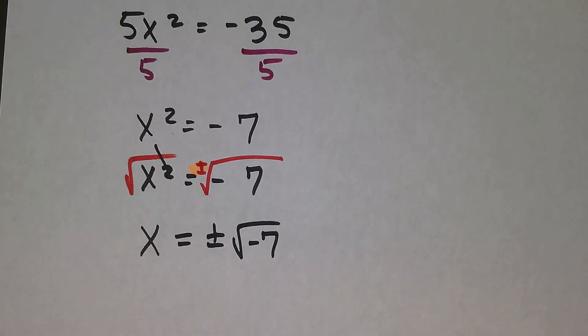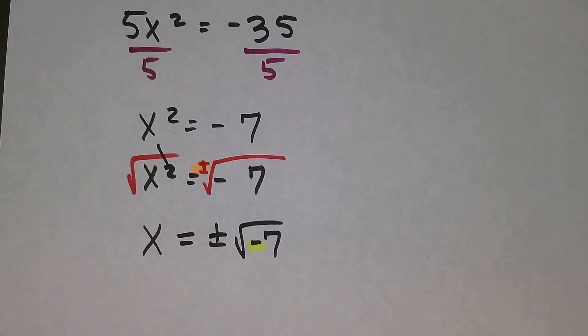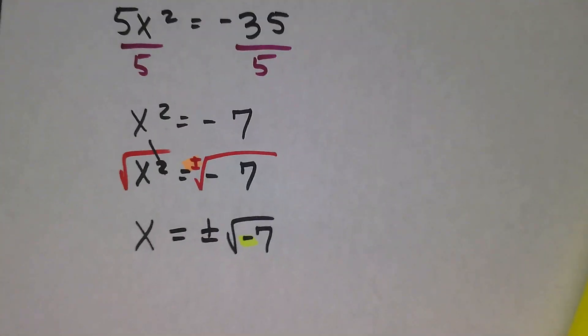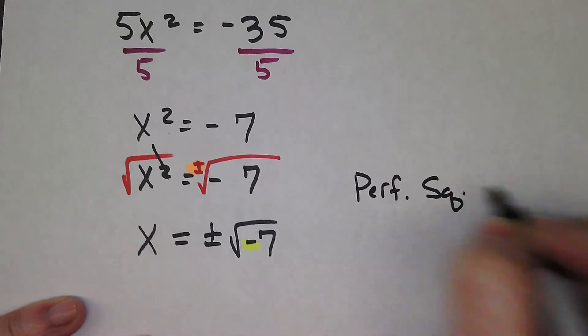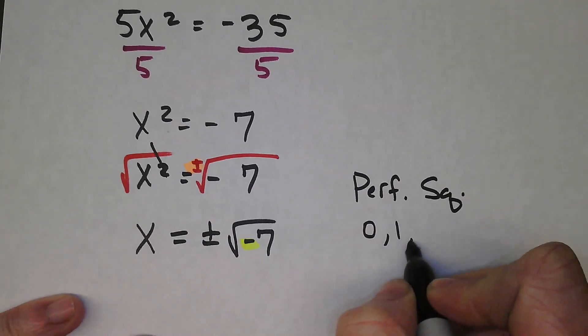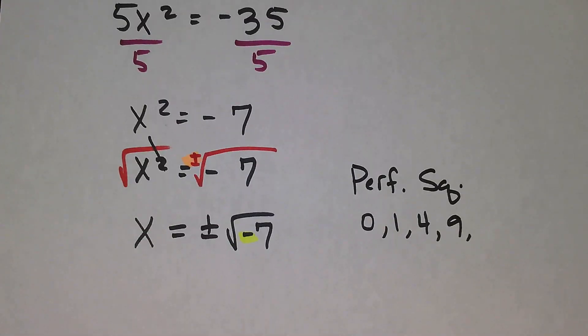So we have ±√-7. I know immediately I'm going to have a complex solution because of that negative under the square root. That's going to become an i. And 7 cannot be simplified anymore. Looking at perfect squares: 0, 1, 4, 9—I've already passed 7, so there's no perfect square that goes into it.